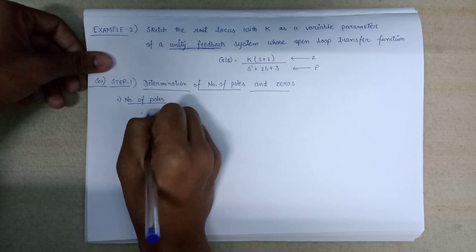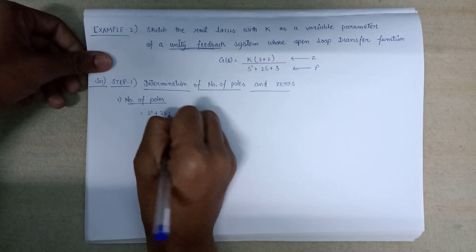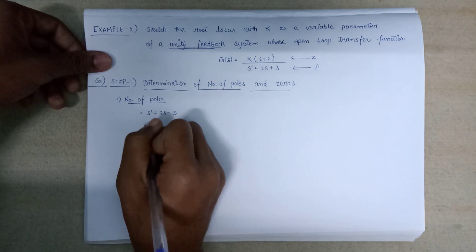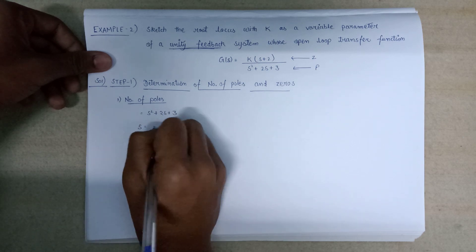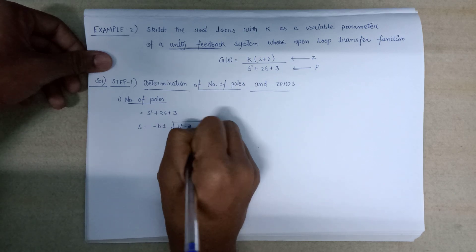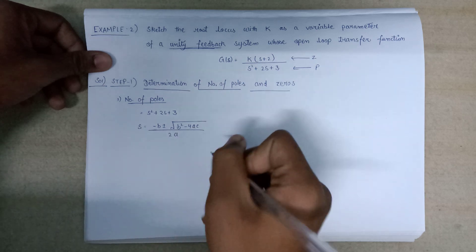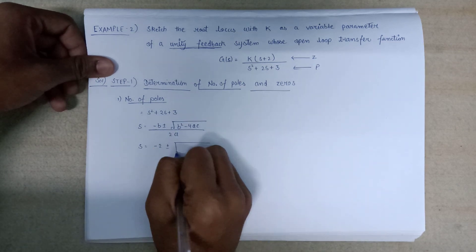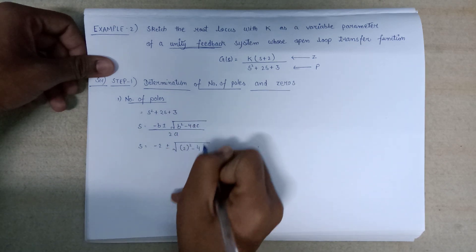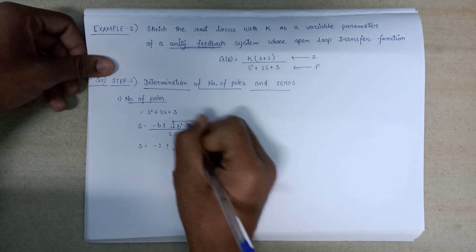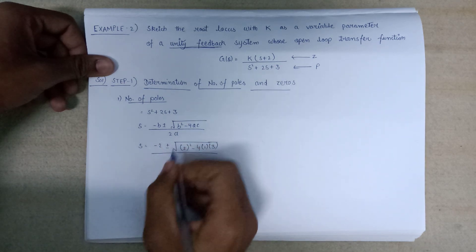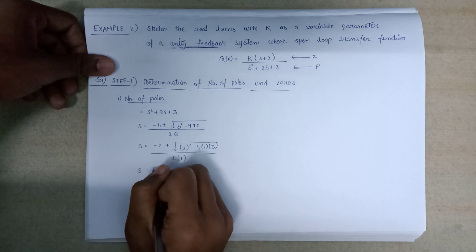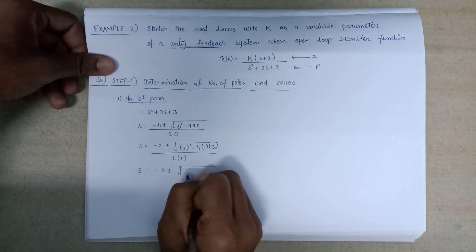The denominator is s² plus 2s plus 3, which is a quadratic equation. We find the roots using the quadratic formula: s equals minus b plus or minus the square root of b² minus 4ac, all divided by 2a. Here b equals 2, a equals 1, and c equals 3.